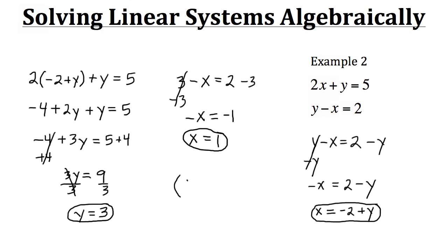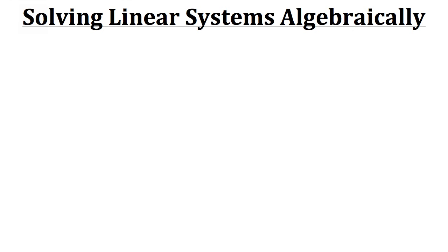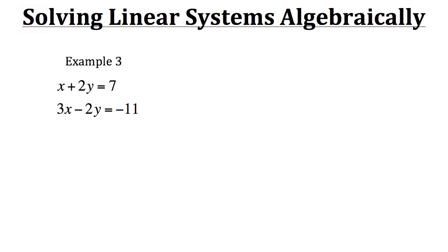And again, if you want to, you could express that as an ordered pair: (1, 3). Now for this section of the tutorial, we're going to learn how to solve linear systems algebraically using what is known as the elimination method. So let's take a look at the first example. Here in example 3, we have our linear system x plus 2y equals 7, and 3x minus 2y equals negative 11.